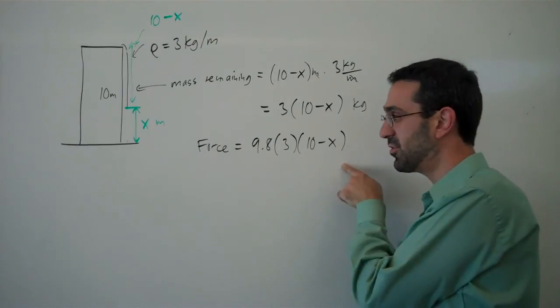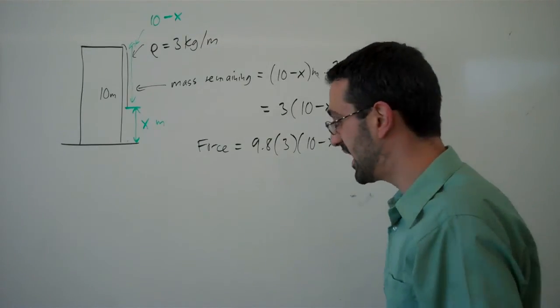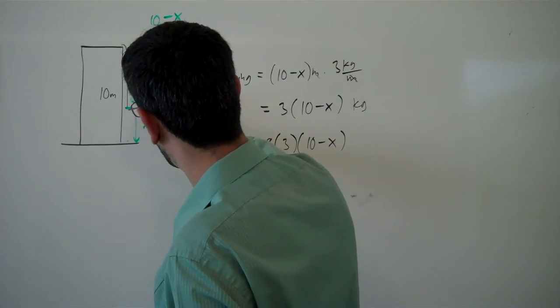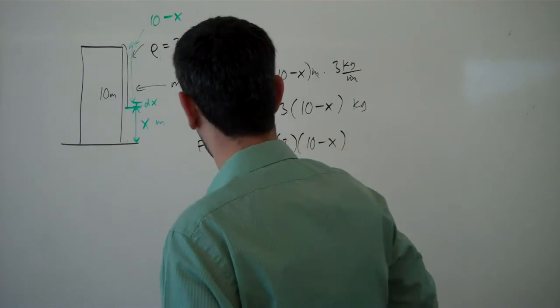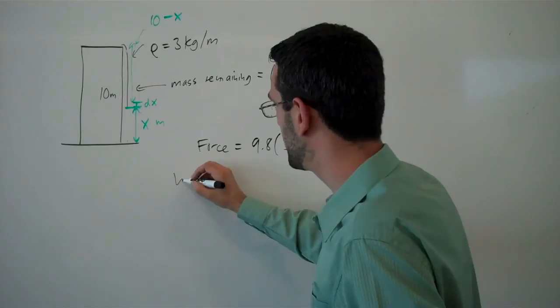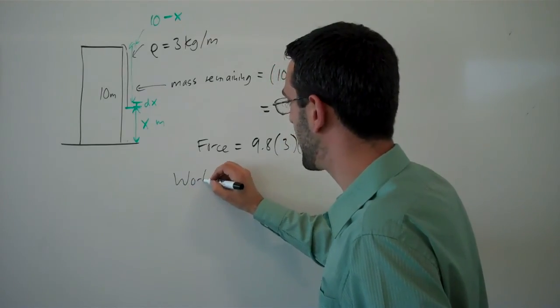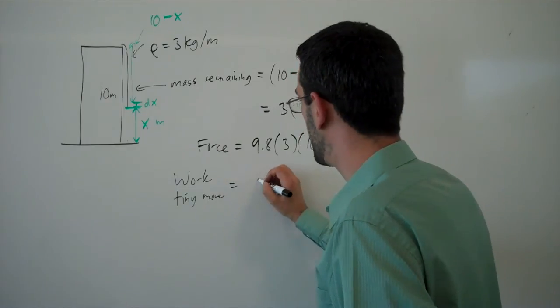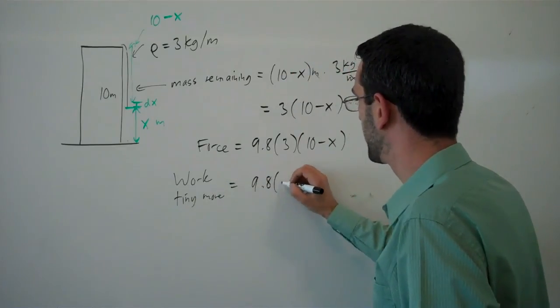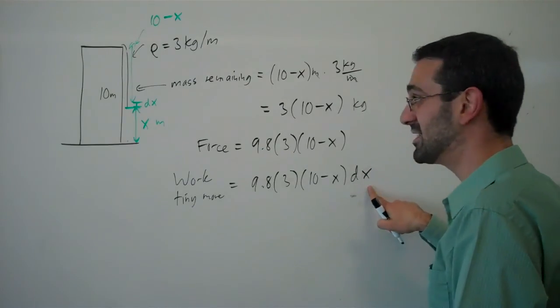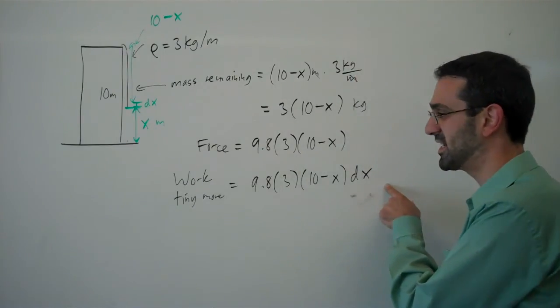And this force is only going to be constant at that moment or over some very tiny little move. And so we'll imagine just lifting the chain up some tiny little amount and the work for that tiny move will be the force over the distance that we lift it. So it's over a little tiny dx.